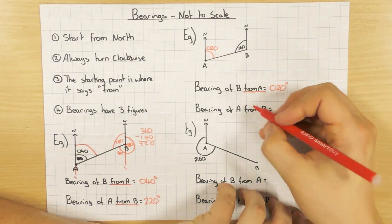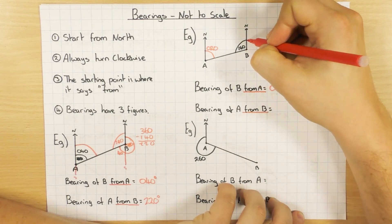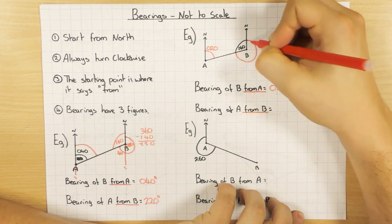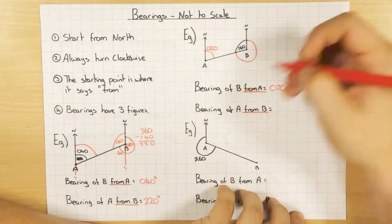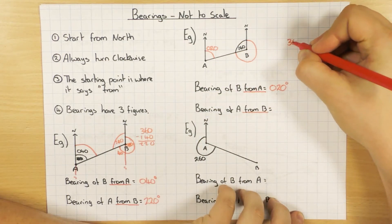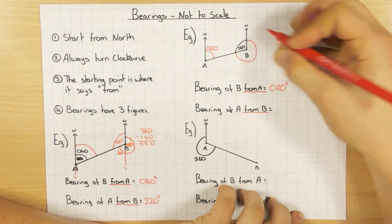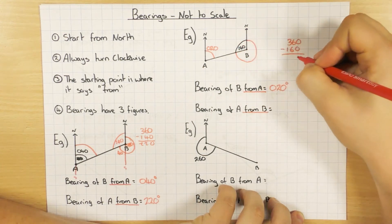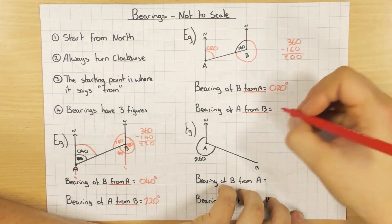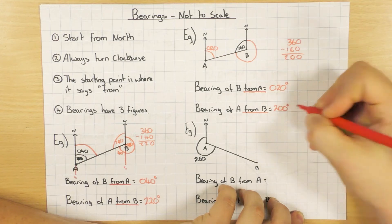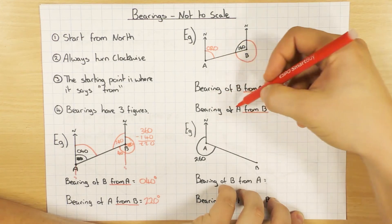For the bearing of A from B, I'm now at B going to A — north, clockwise. I already know the given angle is 160, so I do 360 minus 160, which gives 200 degrees. So the bearing of A from B is 200 degrees.